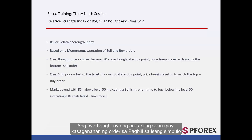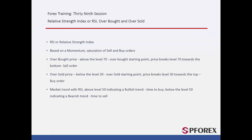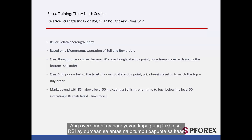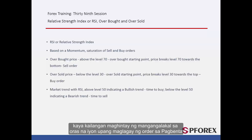Overbought is the time when there is an abundance of buy orders on a symbol and a considerable number of traders are closing their buy orders. Overbought occurs when a trend in RSI passes level 70 towards the top. Whenever price crosses level 70 towards the bottom, a sell order would be beneficial. Thus, a trader should wait for that moment to place a sell order.